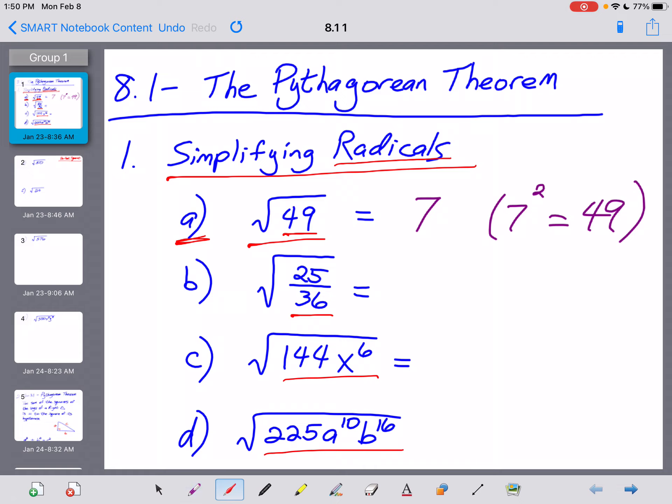Now in an algebra class, we would normally put a plus or minus in front of that 7 right there. Technically, positive 7 squared equals 49, but so does negative 7. If you were to take negative 7 and multiply it by itself, negative 7 times negative 7, that would get you positive 49 as well. So this is technically correct. There are two answers algebraically to the question of what's the square root of 49. But in geometry, since everything we're dealing with here is going to represent the length of a side or maybe the measure of an angle, negative answers don't really make a whole lot of sense. So we're going to say quickly that our answer there is just 7.